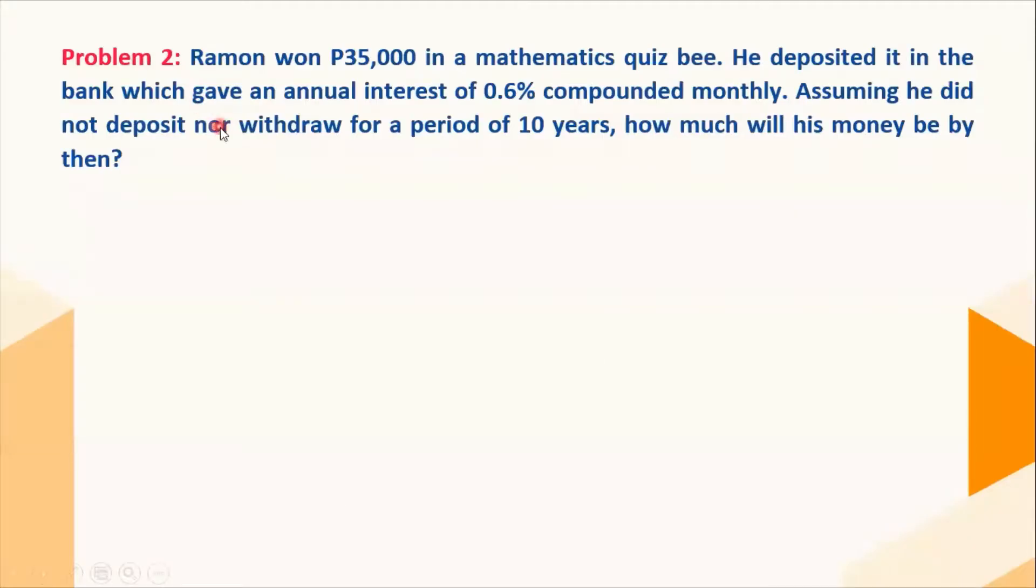Now, let's try our second problem. Ramon won 35,000 pesos in a mathematics quizbee. He deposited it in the bank, which gave an annual interest of 0.6% compounded monthly. Assuming he did not deposit nor withdraw for a period of 10 years, how much will his money be by then?